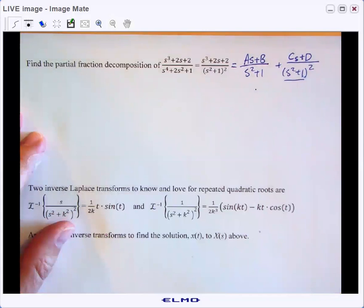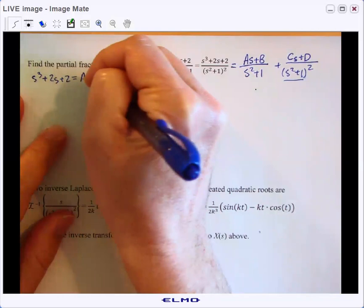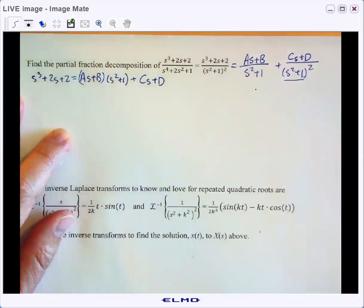All right, getting a common denominator and then doing our partial fraction decomposition, we'll find out that S cubed plus 2S plus 2 is equal to the quantity AS plus B times S squared plus one plus CS plus D.